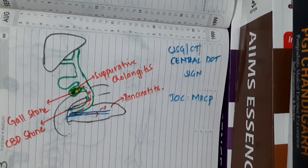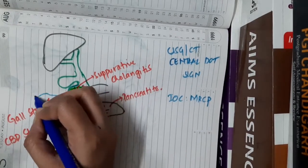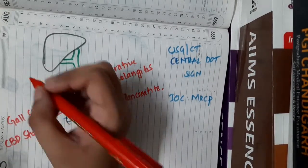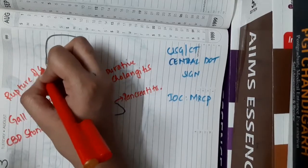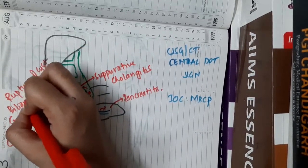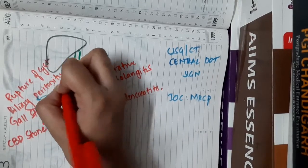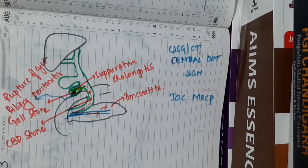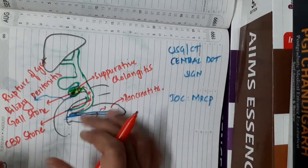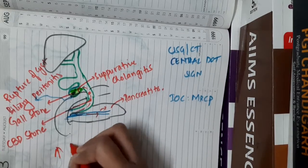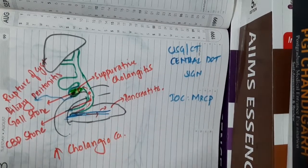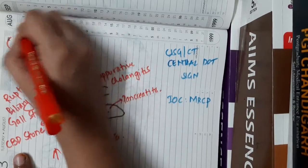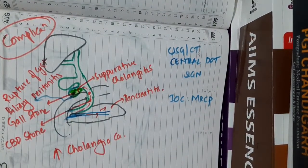The cyst may rupture, causing contents to leak into the peritoneal cavity and resulting in biliary peritonitis — inflammation of the peritoneum due to accumulated bile. Additionally, choledocal cyst carries an increased risk of cholangiocarcinoma.